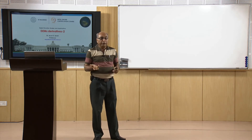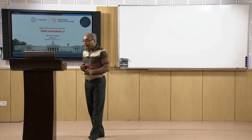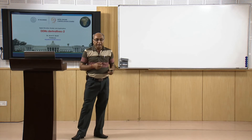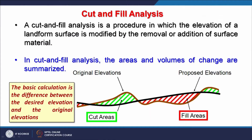In cut and fill analysis, the areas and volumes of changes are summarized. In this schematic, if the reference plane is where a road has to go, this much area has to be cut and this volume of rocks or soil will be removed, while these are the areas to be filled. The basic calculation is the difference between the desired elevation — the black line — and the original elevation — the brown line. The red areas show where material would be filled with material removed from cut areas.